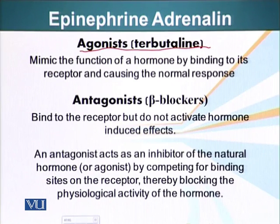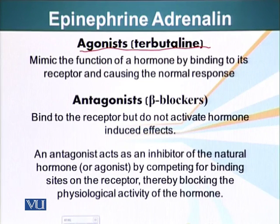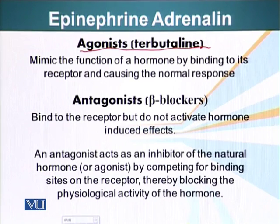Tamoxifen is both an antagonist and an agonist. It is an antagonist of estrogen in breast tissue. Women who have breast cancer — because the number of receptors on their breast tissue has increased or for other reasons — are given higher doses of tamoxifen. Tamoxifen binds these receptors and prevents them from going through a conformational change and signaling the cell. This binding prevents estrogen from binding the receptor; if estrogen bound, it would activate the receptor and signal the cells to divide. So tamoxifen prevents that.